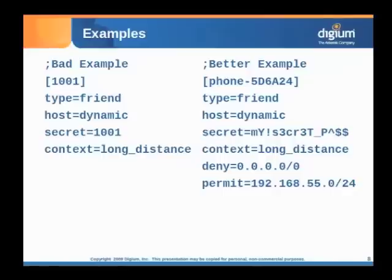You also notice at the bottom of the better example that I've added an access control list, saying only allow this phone to connect and authenticate if it's coming from a particular subnet — in this example, the 192.168.55 subnet.